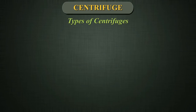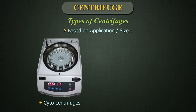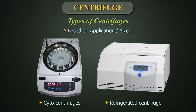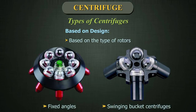Types of centrifuge used in a clinical laboratory can be classified, based on application or size, into tabletop centrifuge, hematocrit centrifuge, cytocentrifuge, or refrigerated centrifuge. Based on design and the type of rotors, centrifuges are either fixed angle or swinging bucket centrifuges. It depends upon whether the sample is held at a given angle to the rotational plane or is allowed to swing out on a pivot.